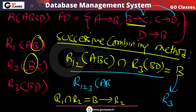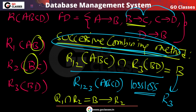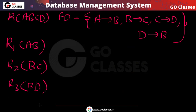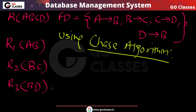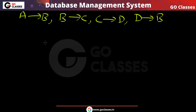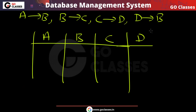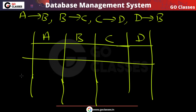After combining, we get R(A, B, C, D), which is the original relation. So the successive combining method says this is lossless. Remember, if this method gives lossless then the answer is lossless. Now let's also verify using the chase algorithm.